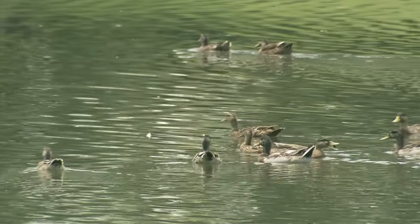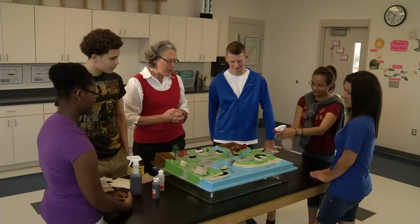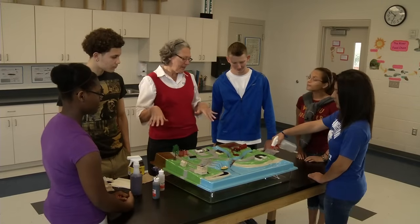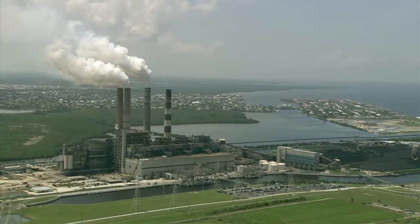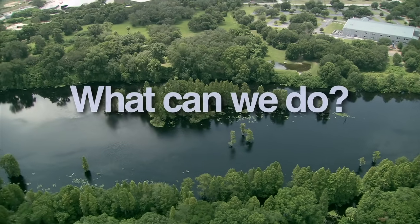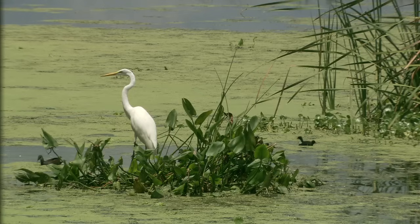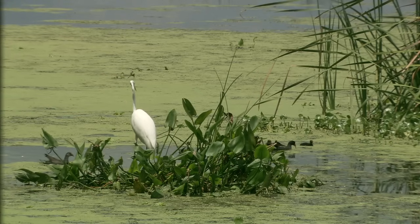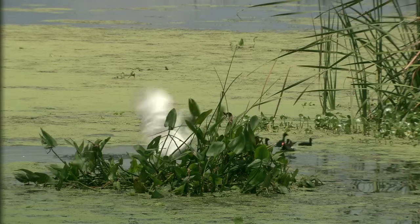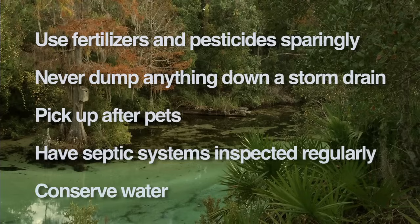Protecting water quality is a shared responsibility, and we need to understand how our actions affect the environment around us. We've seen how easy it is for even small amounts of pollutants to become big problems when combined with other small amounts as water moves across a watershed. Here are five simple actions that can help improve the health of Florida's watersheds and water quality, now and for future generations: use fertilizers and pesticides sparingly, never dump anything into a storm drain, pick up after your pets, have your septic system checked regularly, and conserve water.